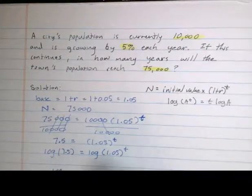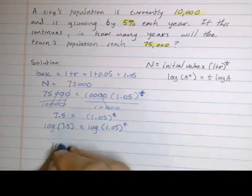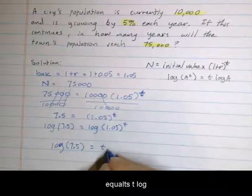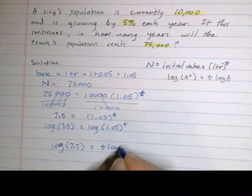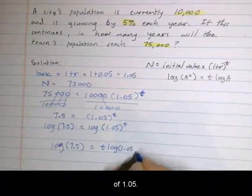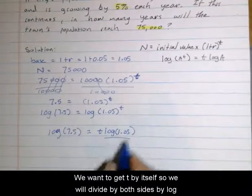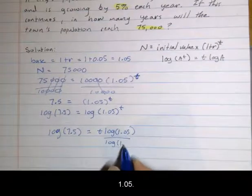So we get log of 7.5 equals t log of 1.05. Then we want to get t by itself, so we'll divide both sides by log of 1.05.